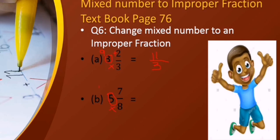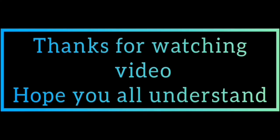Part B: 5 whole 7 by 8. We have whole number 5 and denominator 8. We multiply 5 by 8 and get 40. Now add the numerator: 40 plus 7 we get 47. The denominator 8 remains the same, so the answer is 47 by 8. Hope you all understand how to change a mixed number to an improper fraction.